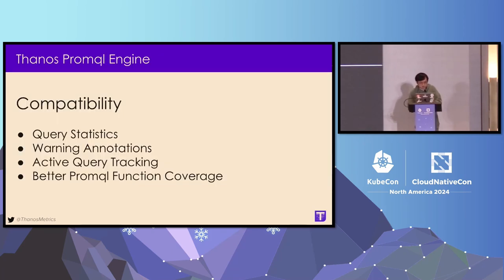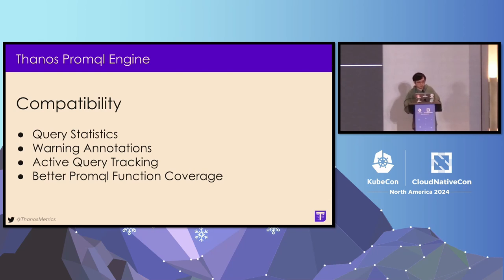Next, I want to talk about the Thanos PromQL Engine. Since last KubeCon, we've mainly been working on improving compatibility of the Thanos PromQL Engine with the upstream PromQL Engine. We added support for query statistics — when you specify `stats=all`, you can see how many samples you process. We also added support for warning annotations, active query tracker, and more PromQL function coverage natively, including native histogram functions and experimental functions like `sort_by_labels`.